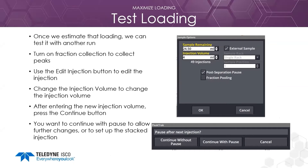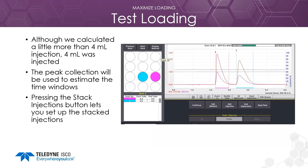Once the loading is estimated, we can test it with another run. I turned on fraction collection in the main screen, and the peak collection times will be used by PeakTrack to set time windows for each peak. I then used the edit button to change the injection volume, entering the new volume and pressing continue with pause so we can set up the stacked injection or make other changes if needed. Four milliliters worked very well — I still have some resolution, but with only 20 mL of sample left, that will be only five injections, so further optimization isn't worth the time and effort.